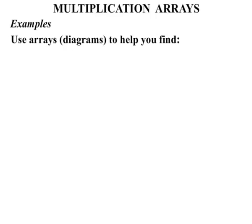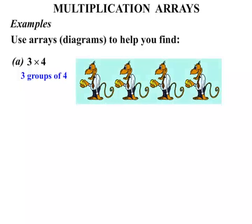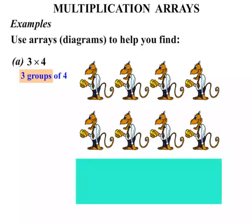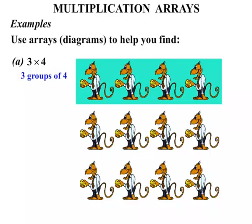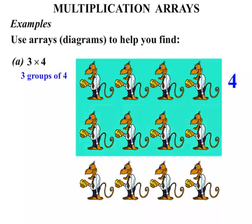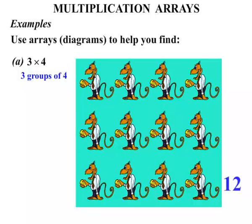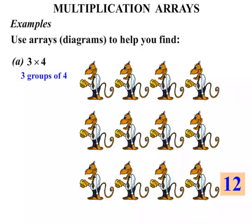Examples. Use arrays or diagrams to help you find, in part A, three times four. Now three times four means three groups of four — three lots of four. So let's think of four monkeys: one, two, three, four monkeys. That's our one group. We want three groups: one group, a second group, and a third group. Let's count them: we've got four, another four makes eight, another four makes twelve. So three times four, three lots of four, equals twelve.